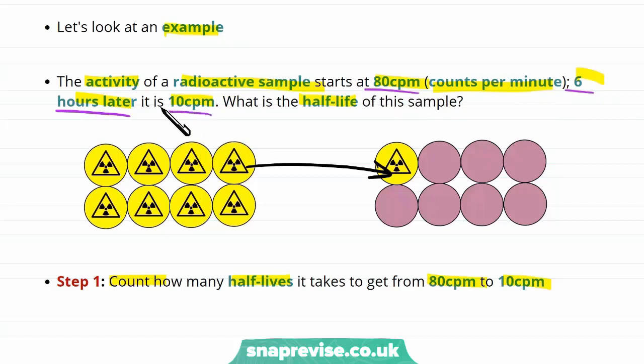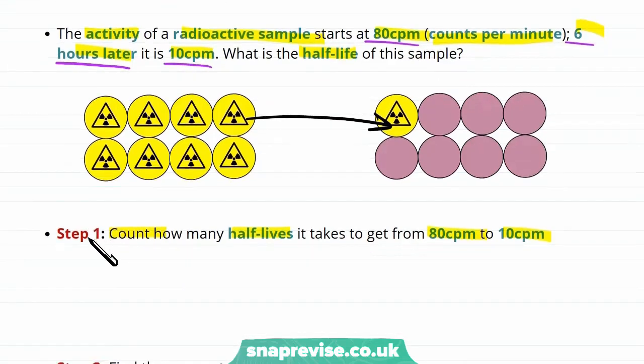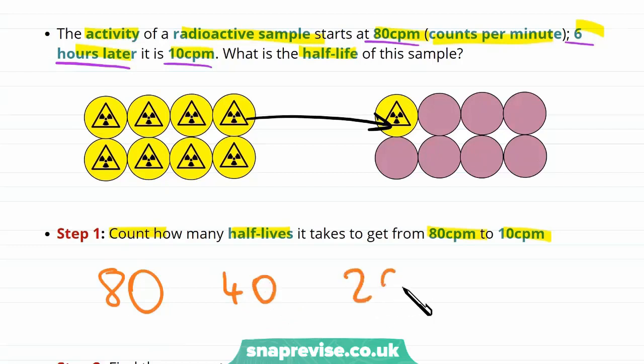So if we can find out how many half-lives that is we know that some number of half-lives equals some number of hours, and we can find out how many hours one half-life is. So we started with an activity of 80 counts per minute. One half-life would take us to 40 counts per minute. Two half-lives would take us to 20 counts per minute. And then another half-life would finally take us to 10 counts per minute. So altogether that's one, two, three half-lives. So that's three half-lives that our sample has been through.